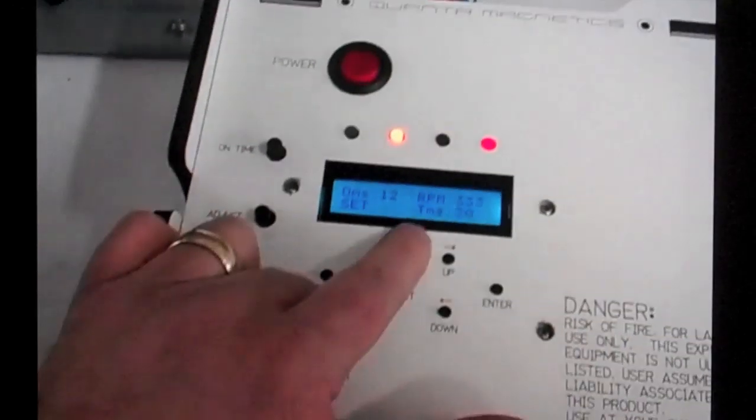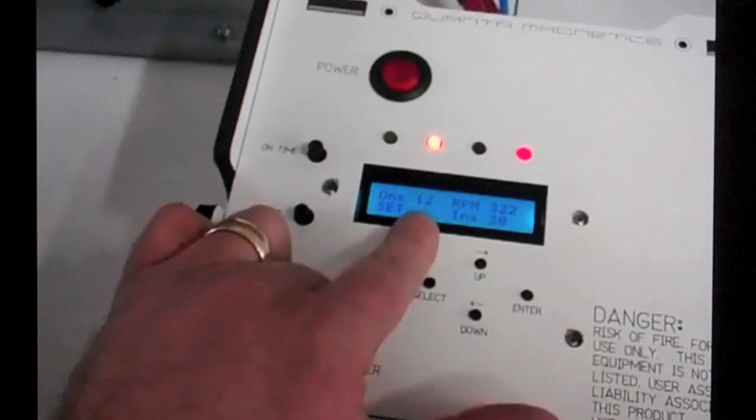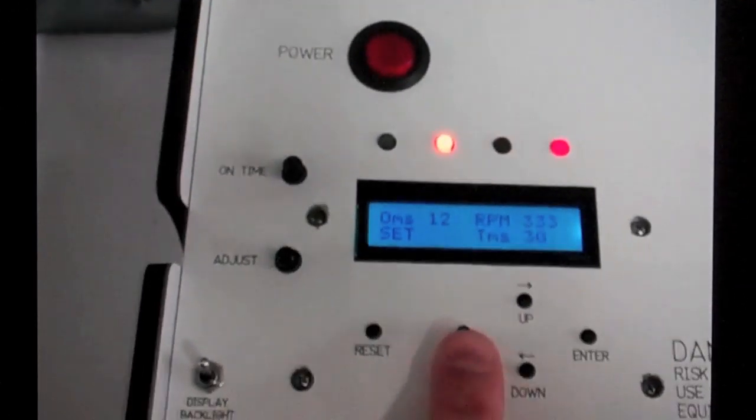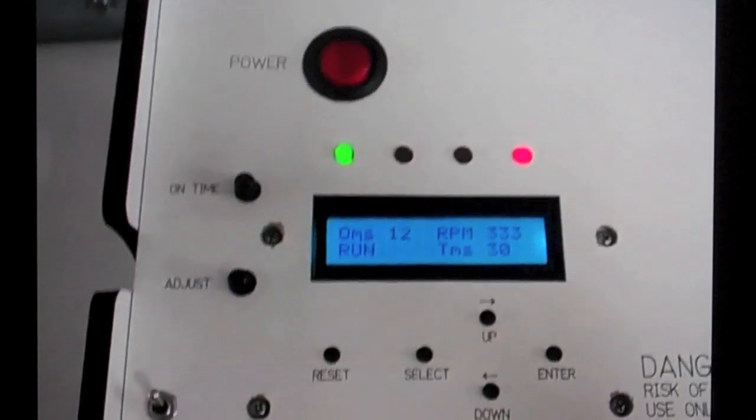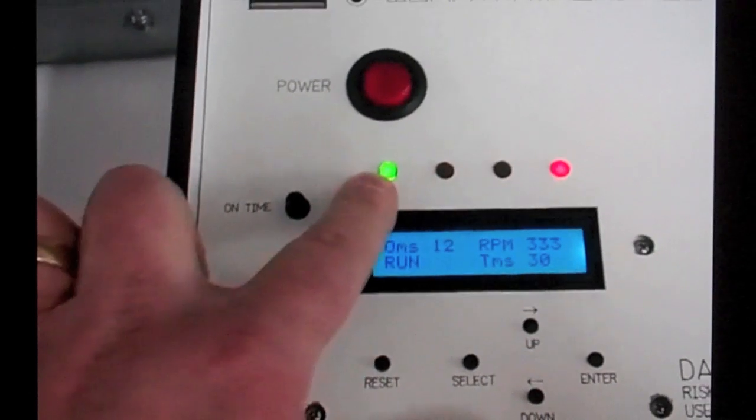But anyways, once you have the settings where you want it, you simply push the select button. Then we'll put it in a run mode, and the LED changes from a set to run indication.